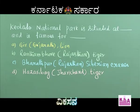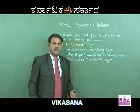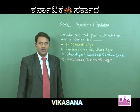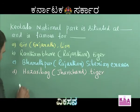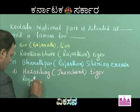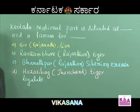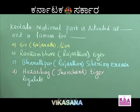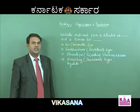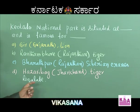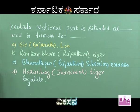Organisms show different types of responses to the environment. There are four different types of responses to the habitat. Regulate is a phenomenon wherein the organisms maintain their body temperature and osmotic concentration constantly, even though the environmental temperature and osmotic concentration changes. In other words, organisms which can maintain homeostasis are called regulators.